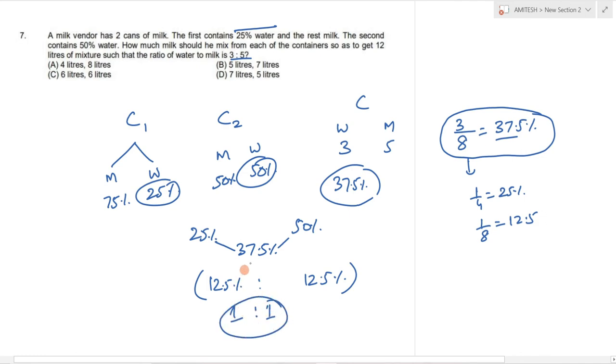If you need to make 12 liter mixture, then you need 6 from the first container and 6 from the second container. So our answer is option C.